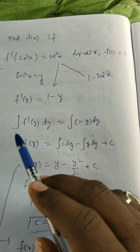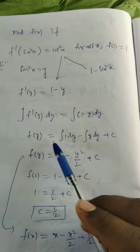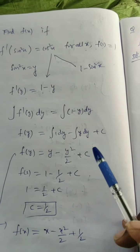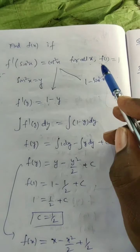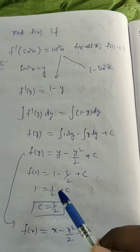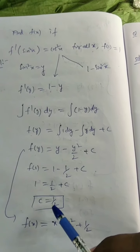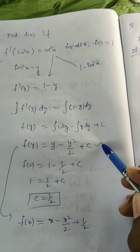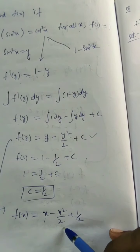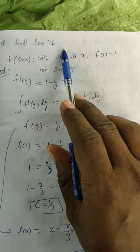Integrating both sides: f(y) = y − y²/2 + c. Using f(1) = 1: 1 − 1/2 + c = 1, so 1/2 + c = 1, giving c = 1/2. Therefore f(x) = x − x²/2 + 1/2.